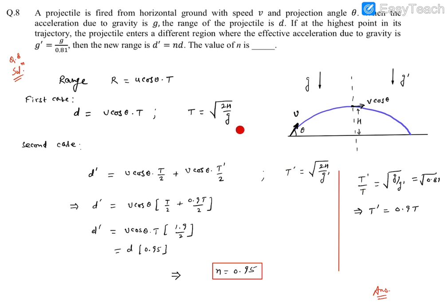From here, we can find t prime by t, the ratio of these two. That will be square root of g upon g prime. Now, g is g, g prime is g divided by 0.81. So that turned out to be square root of 0.81, which is 0.90. So that's the new time of flight.